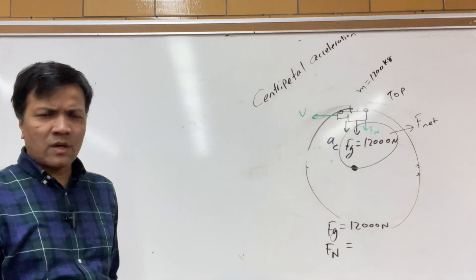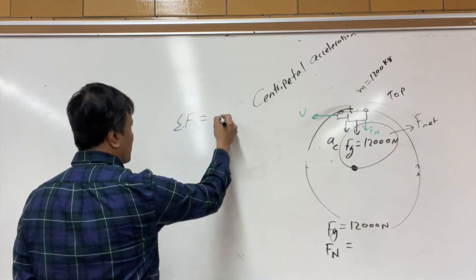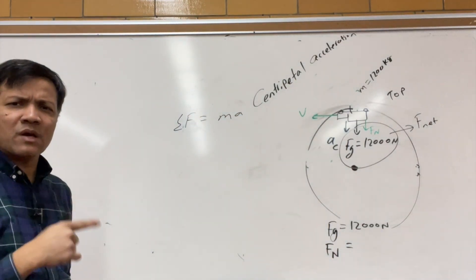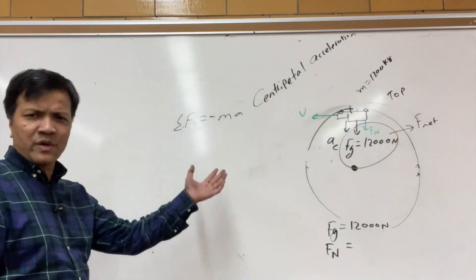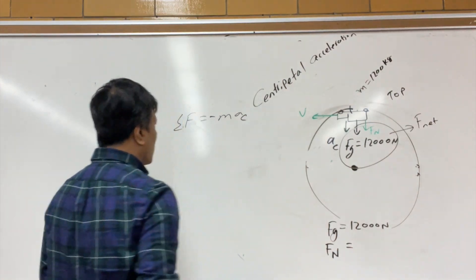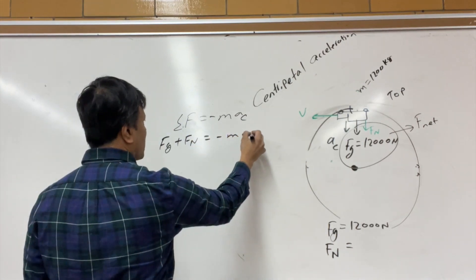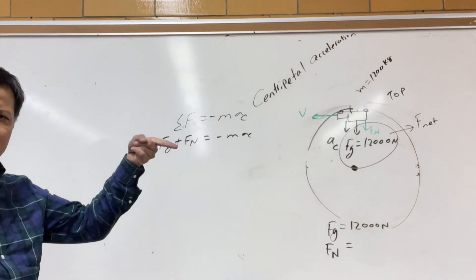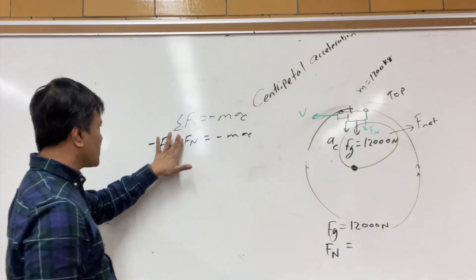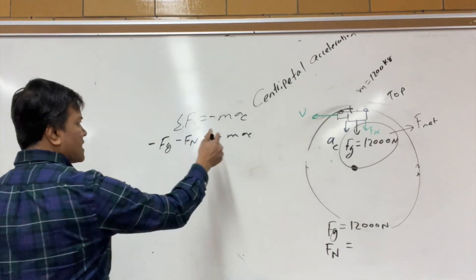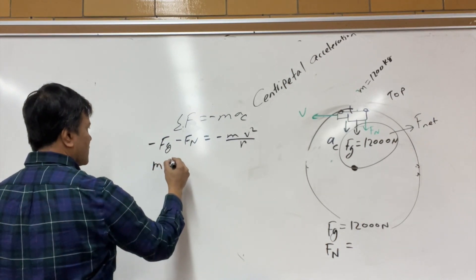To find the normal force, start with Newton's second law: F equals ma. But the acceleration is centripetal acceleration — directed downward at the top of the loop. The forces are fg downward plus fn also downward, and they equal m times centripetal acceleration, where centripetal acceleration equals v squared over r. So the equation becomes: fg plus fn equals m times v squared over r.